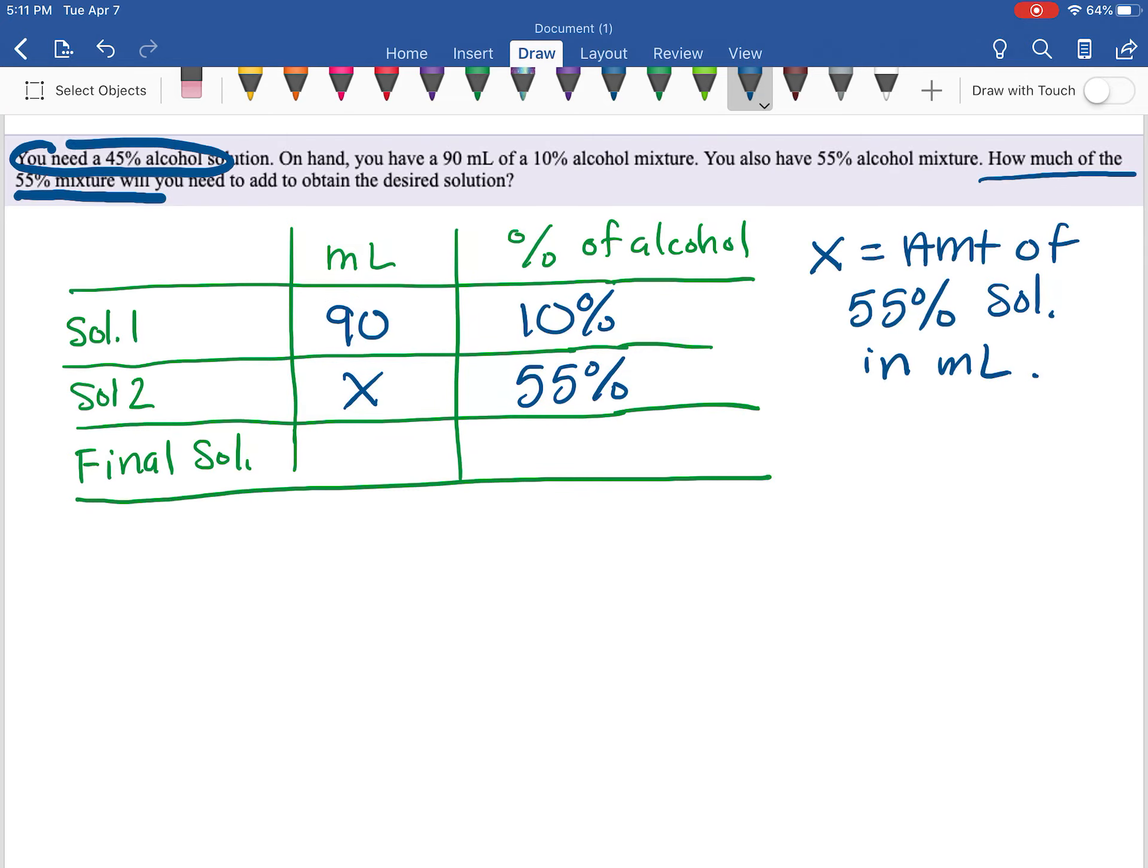Now we want to end up with, according to the problem right here, you need 45% alcohol solution. So I want my final solution when I mix the two together to be 45%.